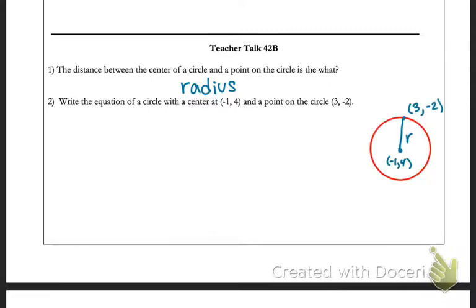We know the center is negative 1, 4. We know we have a point 3, negative 2 and we have the radius, which is what we would need for the equation of the circle.